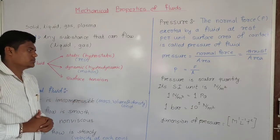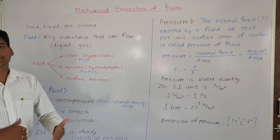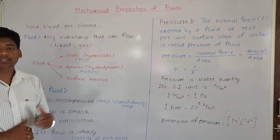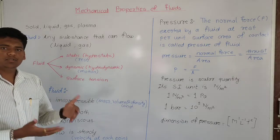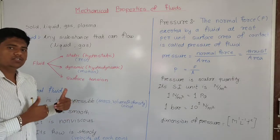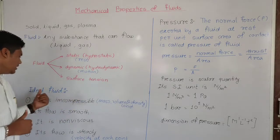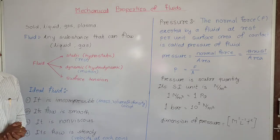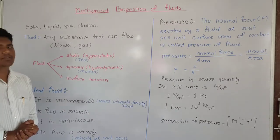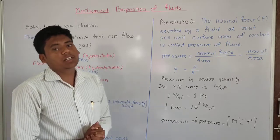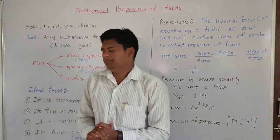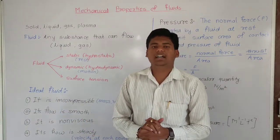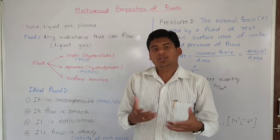Next is surface tension. Surface tension is related to a particular joint line. This is ideal fluid. The ideal fluid is incompressible.